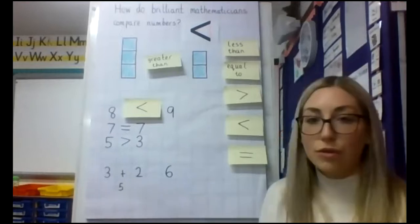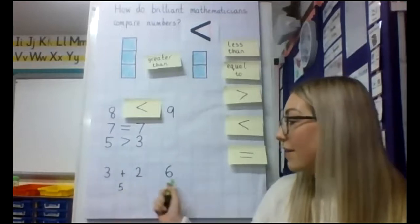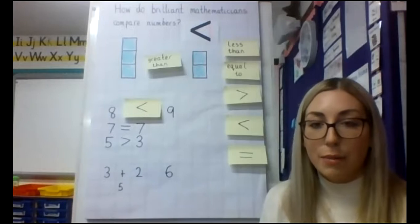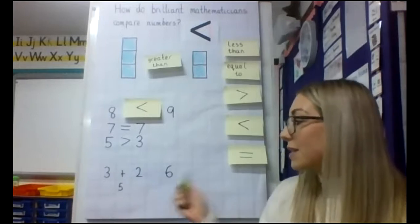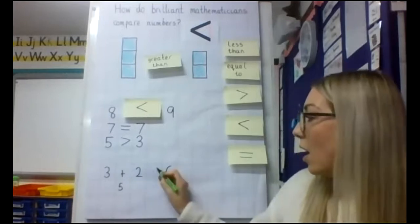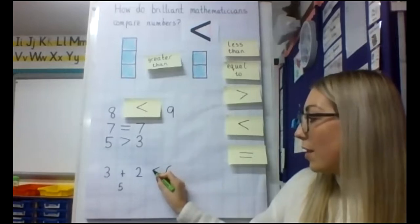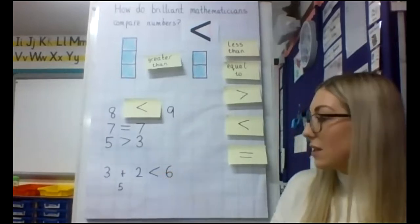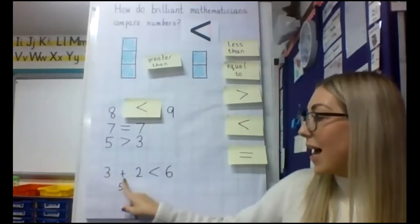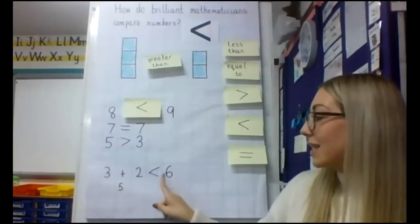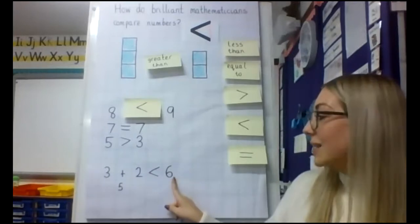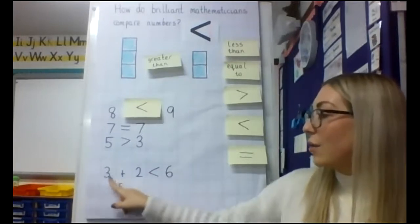I know that this is now five. I'm going to make a note to remind myself, five and six. I'm now going to compare those numbers. Which one's bigger? Six is bigger, so I'm going to make sure that the biggest end is facing towards my six. So I know that three add two is less than six, and six is greater than three add two.